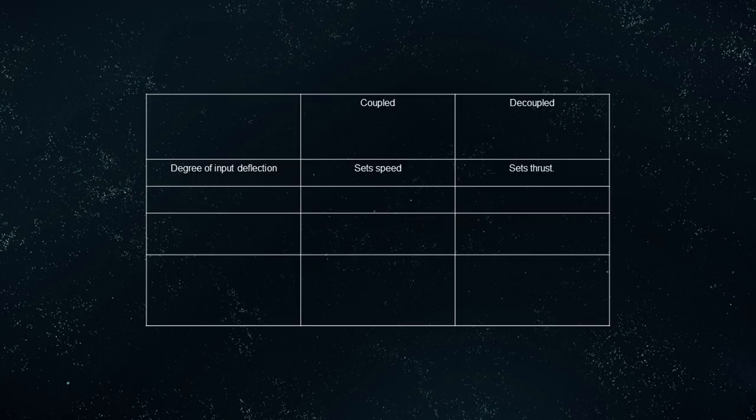In coupled mode, the degree of input deflection sets the speed. However, in decoupled mode, the degree of input deflection sets the thrust. In coupled mode, the direction of input deflection sets the desired direction of flight, whereas in decoupled mode, it fires the desired thruster.